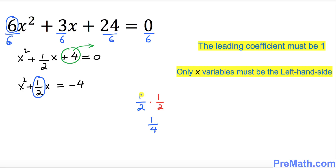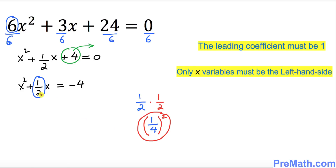So the first step is you multiply by 1 over 2, and then the next step is you must always square whatever quantity you got. We're going to add this squared quantity on both sides of the equation. Let's go ahead and write that down.